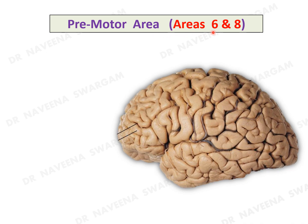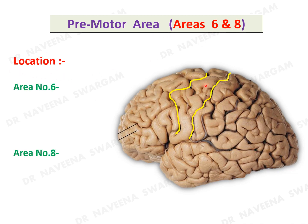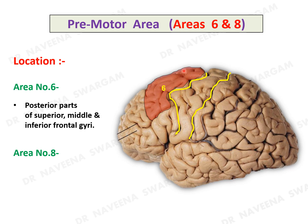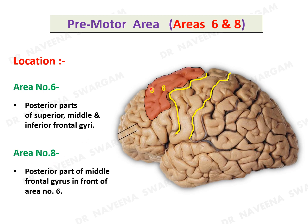Premotor area, areas 6 and 8. Here is the central sulcus and here is the precentral sulcus. Area 6 is located in front of the precentral sulcus on the posterior parts of the superior, middle, and inferior frontal gyri, and also extends onto the medial surface of the frontal lobe. Area 8 is located on the posterior part of the middle frontal gyrus, in front of area 6.